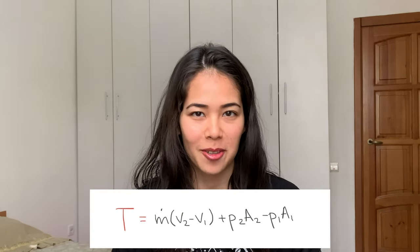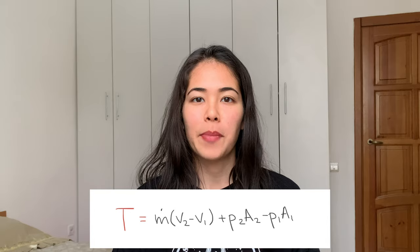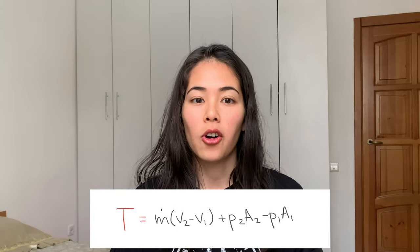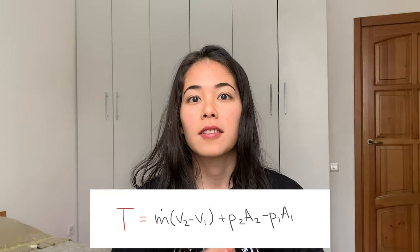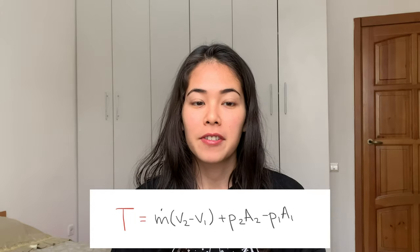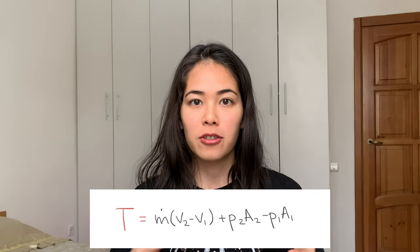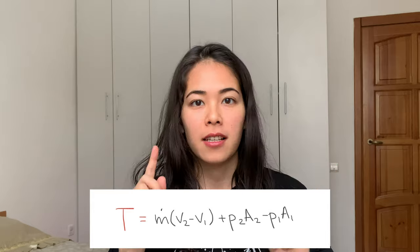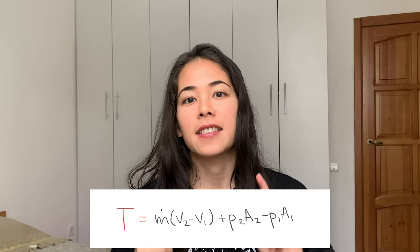First, let's remember the thrust equation from the previous video. As you see, thrust depends on the mass flow rate, on the difference of velocities at the inlet and the exit, and on the difference of the forces due to pressures on the control surface areas at the inlet and exit as well.